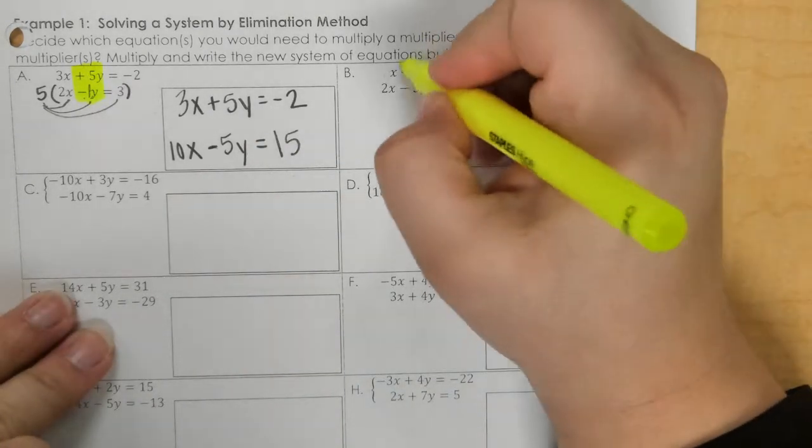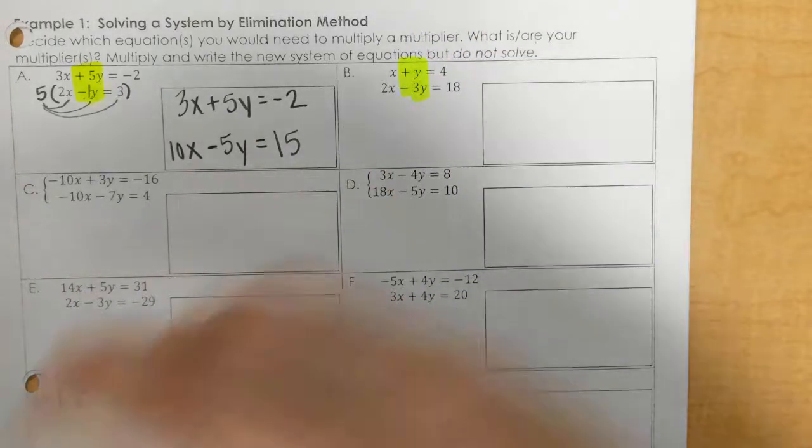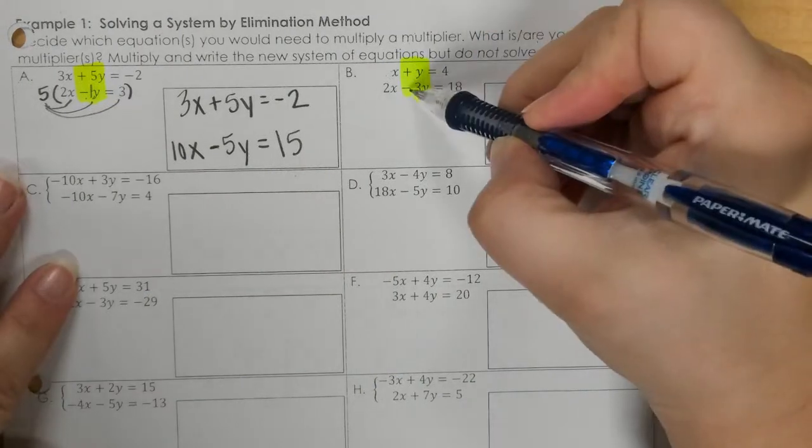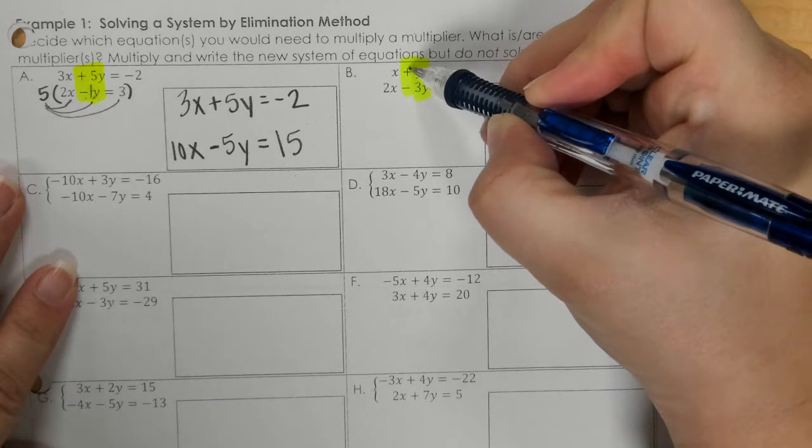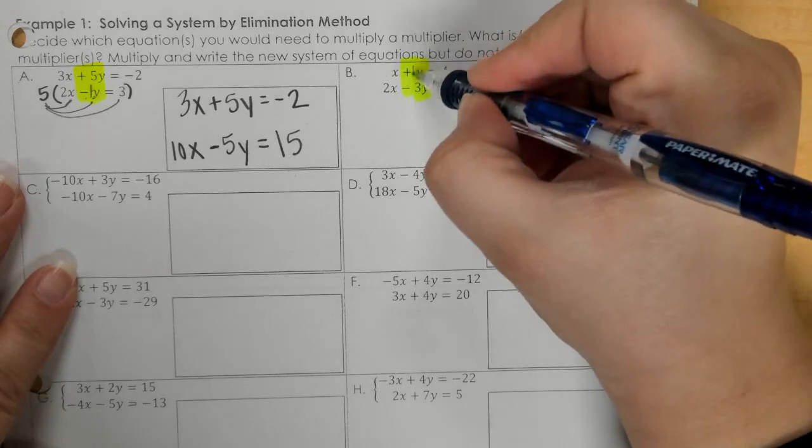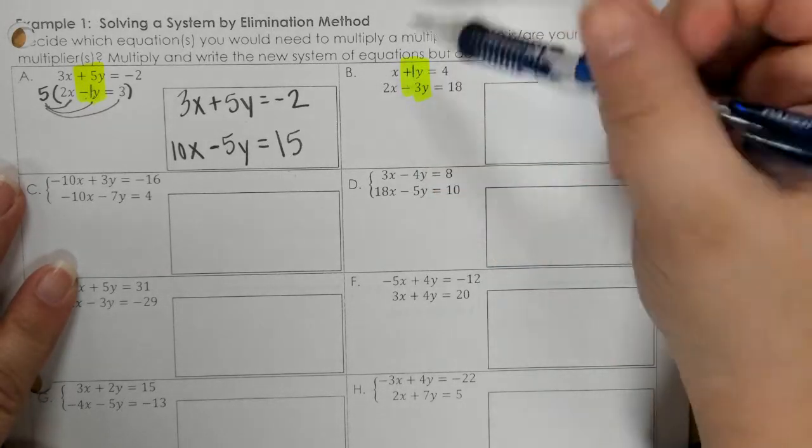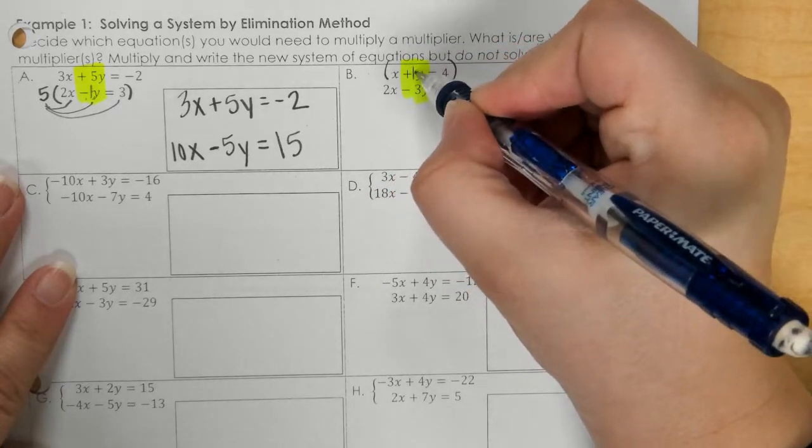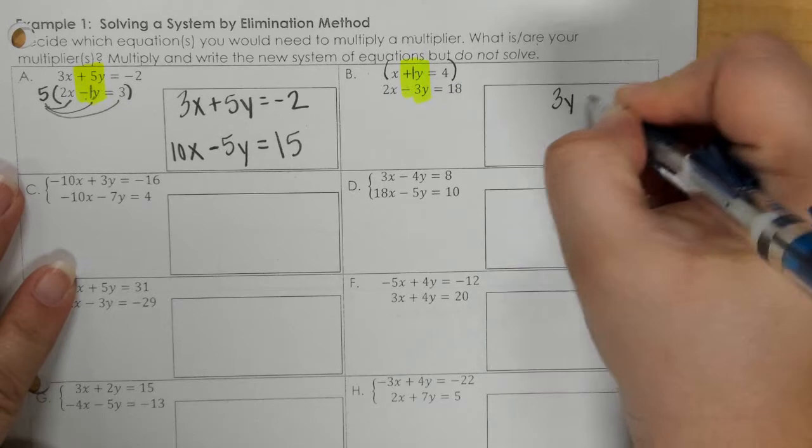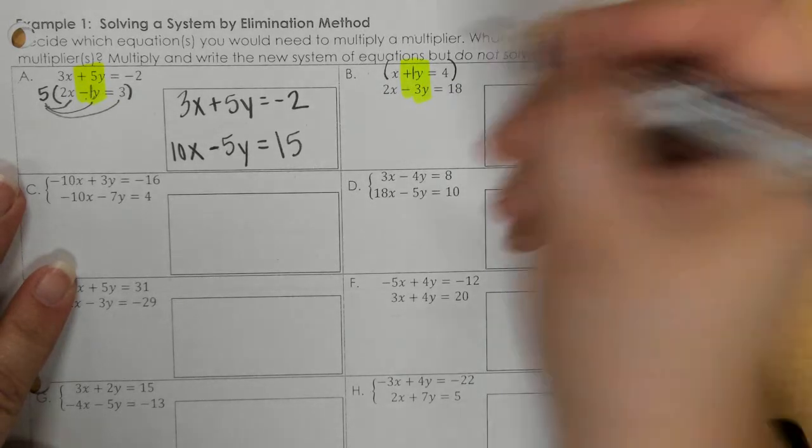And my reason is that if this is already negative, then this has to be a positive, and it's already positive. So if this is a 1y, what number times 1 would make 3y? And that has to be 3.